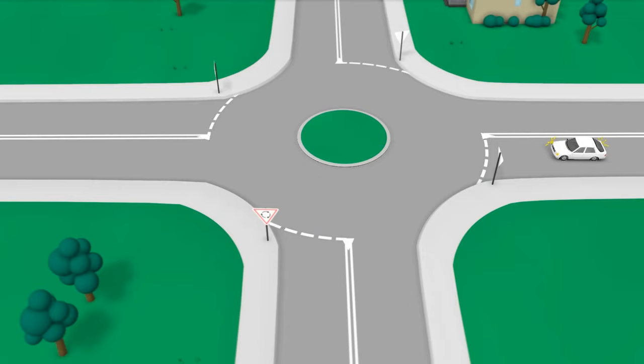Entering a roundabout. When entering a roundabout, you must slow or stop to give way to any vehicle already in the roundabout. You must also continue to use your indicators if you intend to turn left or right or make a U-turn.